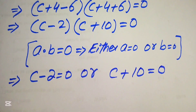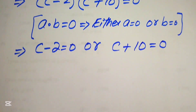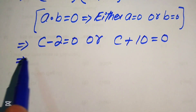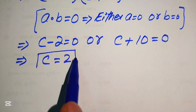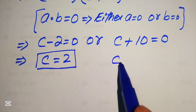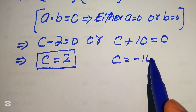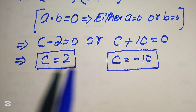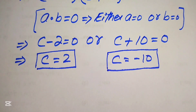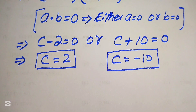Applying this rule, either our first factor equals 0 or our second factor equals 0. From the first factor c minus 2 equals 0, we get c equals 2. From the second factor c plus 10 equals 0, we get c equals minus 10. These are the two values of c, and this is the final answer.